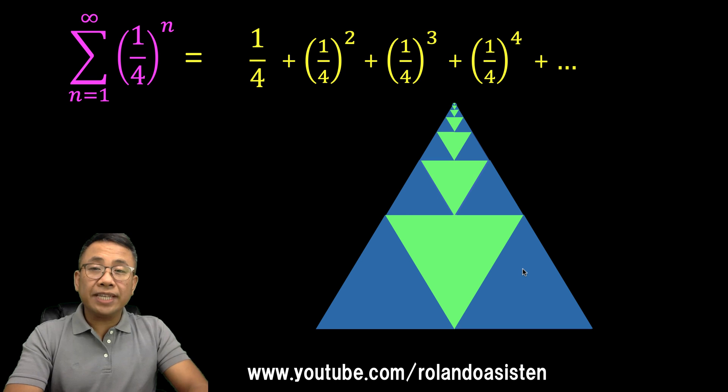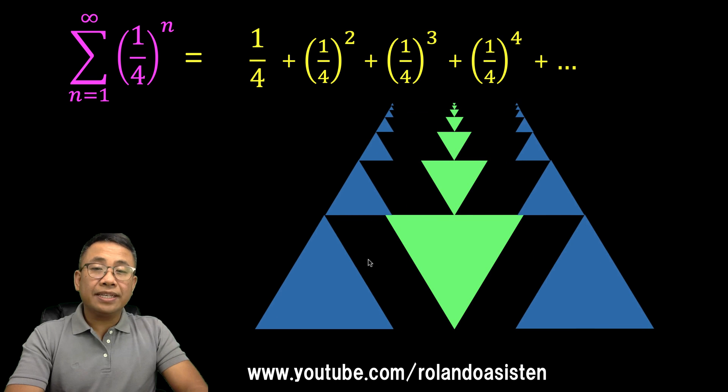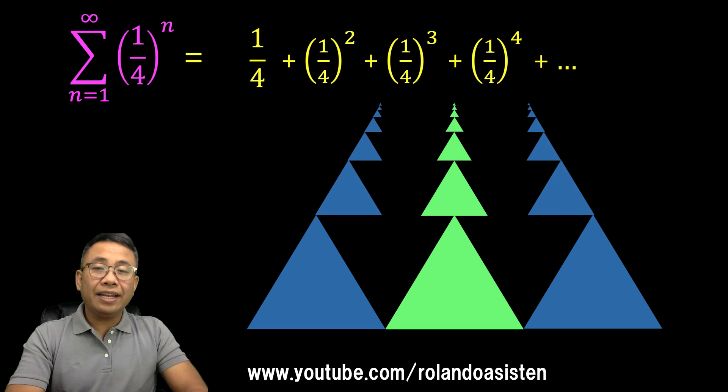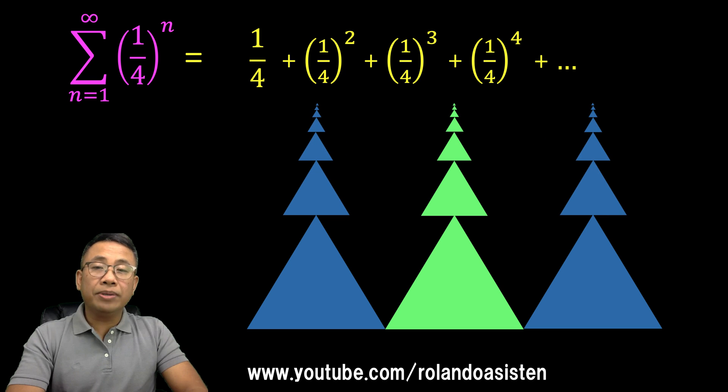Now how can we use this visualization to find the sum of this series? So look closely as I separate these columns of triangles. Let's reorient the green triangles and let's rearrange the blue columns of triangles. Then let's swap places of these green and blue triangles.